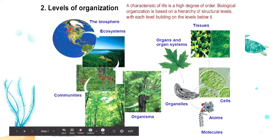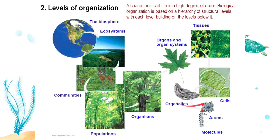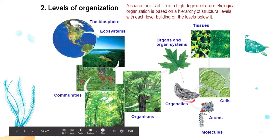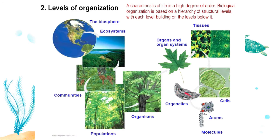The first level of organization would be atoms and molecules — the smallest levels. Atoms are the basic unit of matter, and molecules are atoms that have shared bonds. These molecules and atoms are found in organelles, which are small organ-like structures found within cells that perform certain functions. Examples of organelles include the mitochondrion, chloroplast, and nucleus.